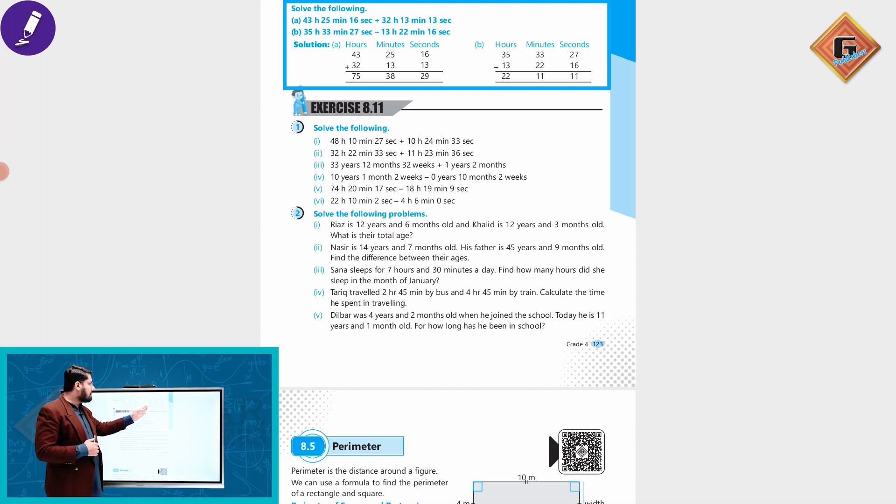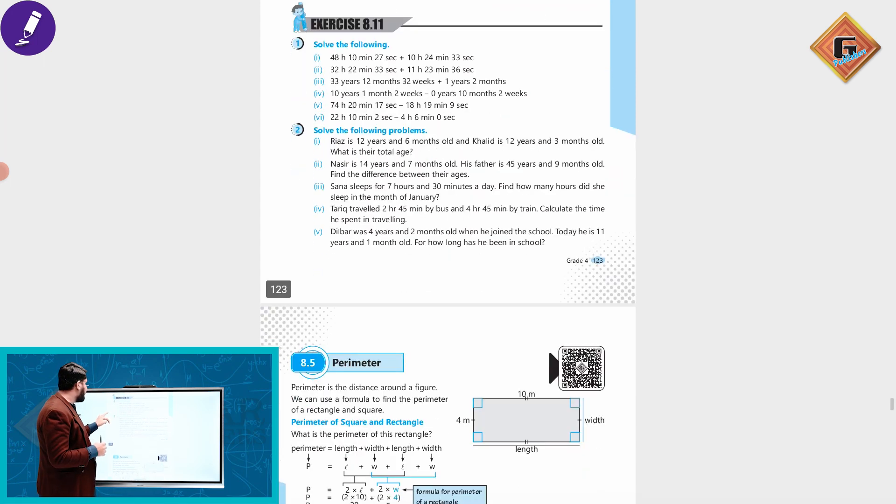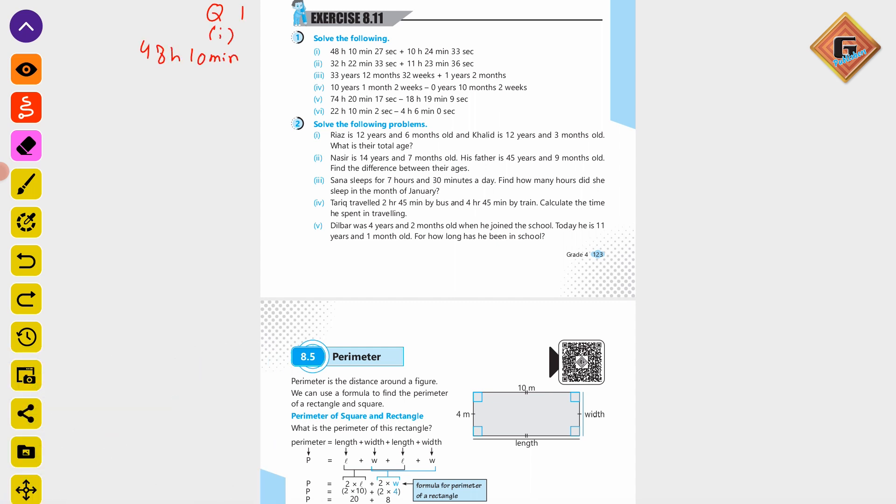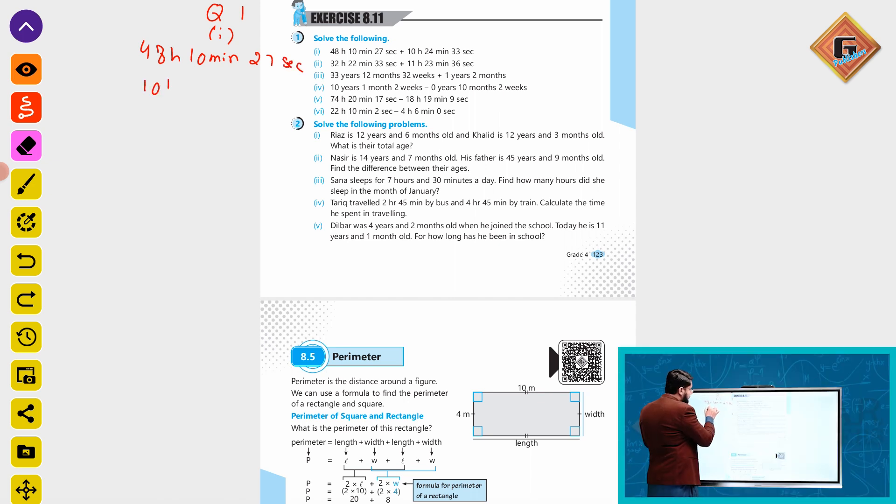We add 32 hours 30 minutes and 11 seconds. We add the seconds: 16 plus 13 equals 29 seconds. We add the minutes and hours accordingly. This gives us the sum.